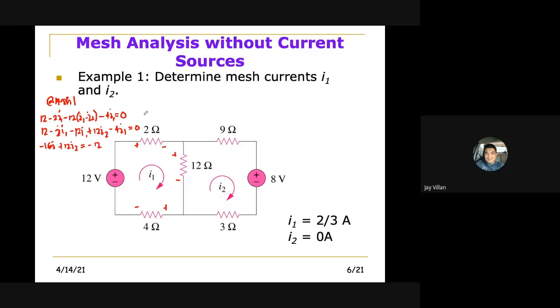And then we have I2 plus 12I2 is equal to negative 12. We simply transferred 12 on the other side of the equation making it negative. Or if you want to make it positive, then that becomes 16I1 minus 12I2 is equal to positive 12. Therefore, that is our equation 1.